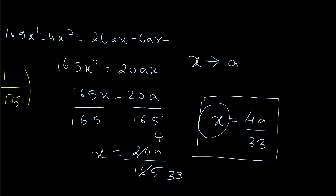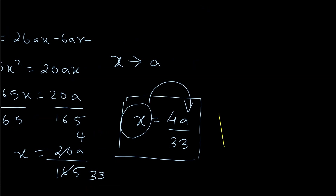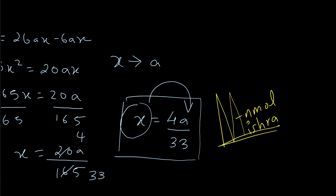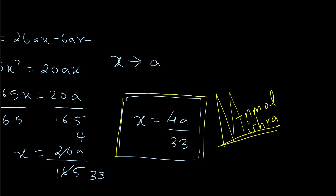The value of X in terms of A is 4A/33 — and that's the answer. This was a trigonometrical approach. If you have any other method or a question you'd like me to try, comment below, or email me, or send it on Instagram — the link is in the description.